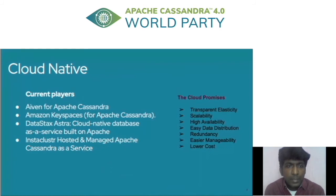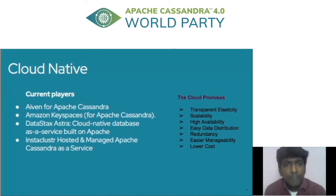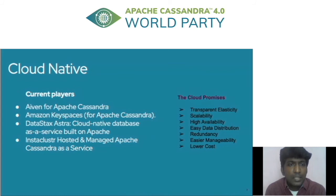Cloud native is becoming the new normal for all major players, and Cassandra is also part of it. Along with its own architectural features like availability and scalability, Cassandra is now becoming cloud native, which in turn reduces cost and gives more leverage to the community. Businesses can focus on what they need to leverage from Cassandra rather than focusing on infrastructure.